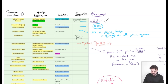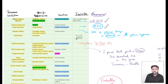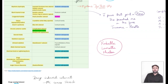In diabetes mellitus we get a snowflake or snowstorm cataract. I remember this by thinking that diabetes is going to bring a storm in all your organs including your eyes, causing a snowstorm cataract. The fourth one: galactosemia causes what is called the oil droplet cataract. The mnemonic I use is GOD — Galactosemia, Oil Droplet.